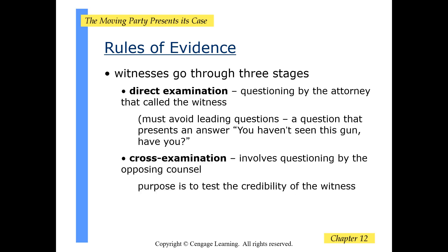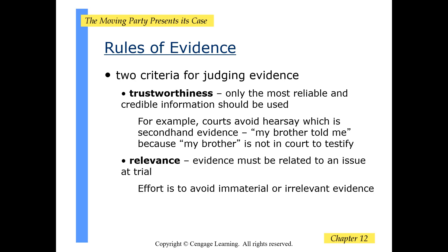Witnesses go through three stages: direct examination, where they are questioned by the attorney that called them; and cross-examination, where they are questioned by opposing counsel. Two criteria for judging evidence are trustworthiness — only the most reliable and credible information should be used — and relevance, meaning evidence must be related to an issue at trial.